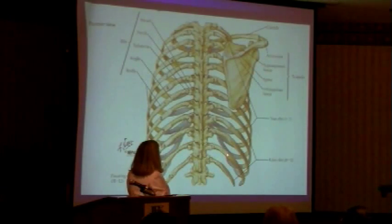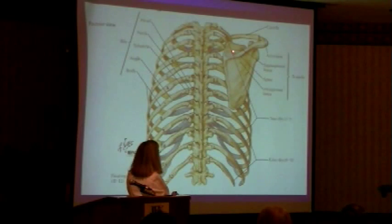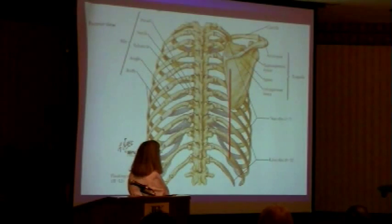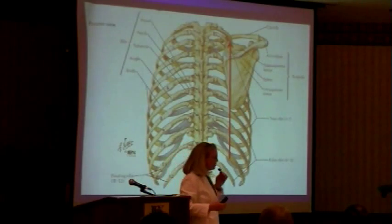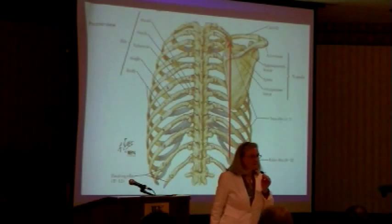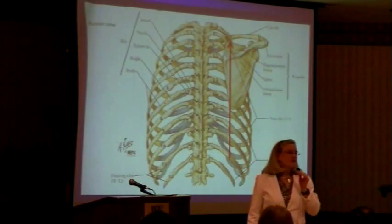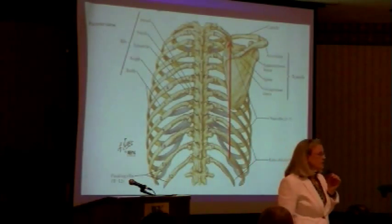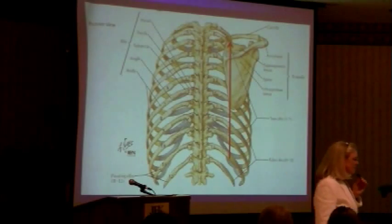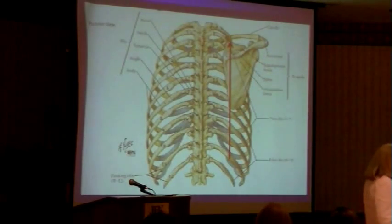This is the posterior rib angle. It comes up right under the medial border of the rib cage — the medial border of the scapula. So let's look at its relationship to the scapula.